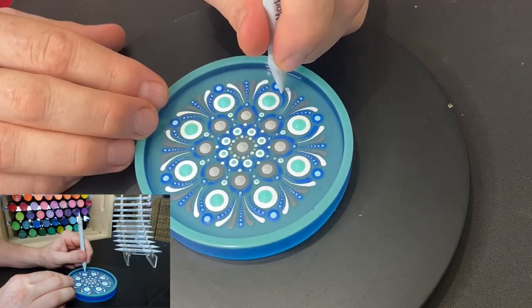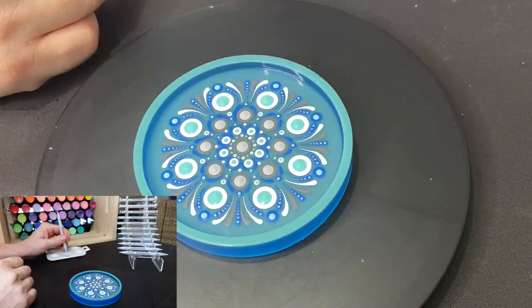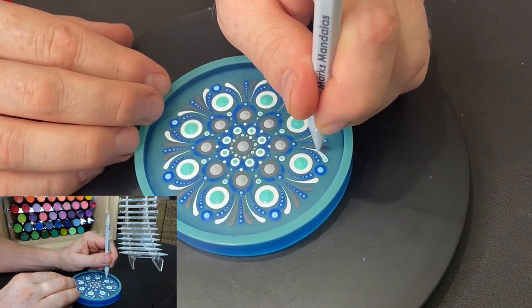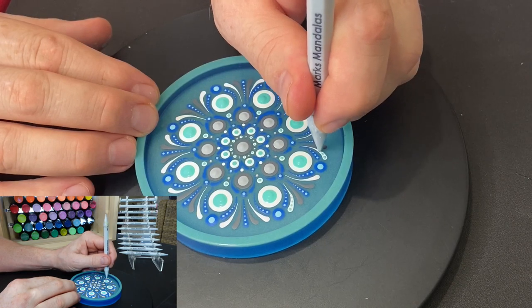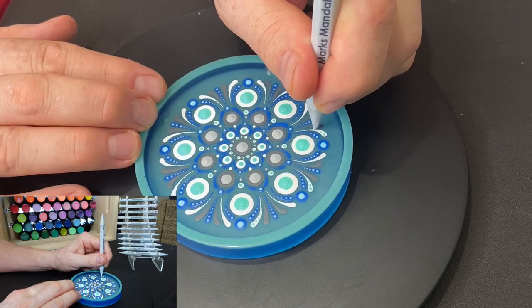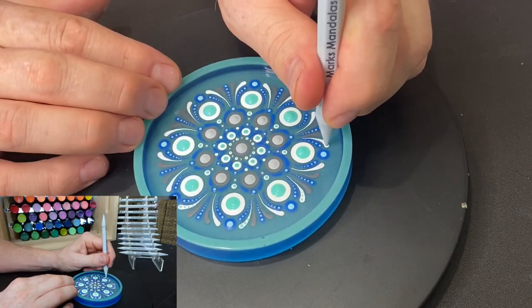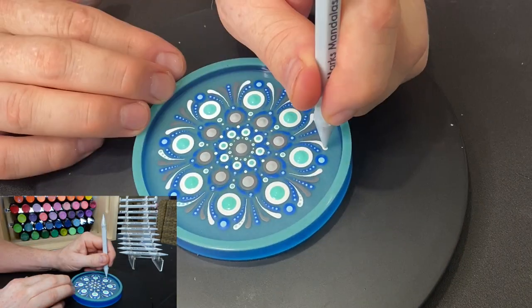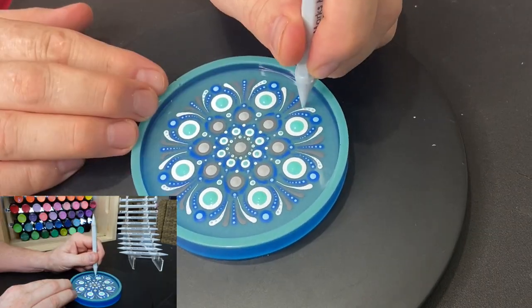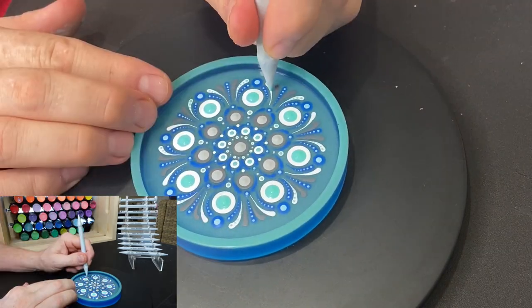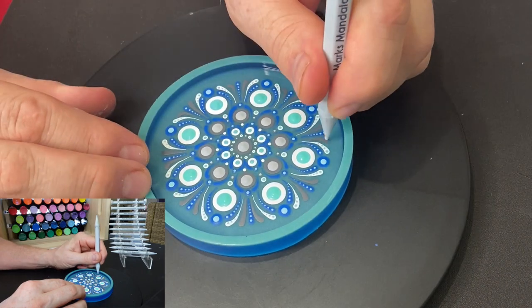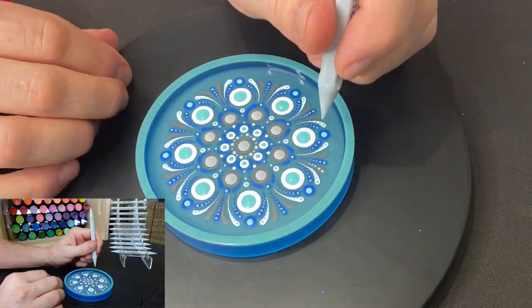Now the one thing that is different between walking the dots and all of the other dots including the drags is you only dip the tool one time and make multiple dots when you're walking the dots. Everything else you want to re-dip the tool every time before making another dot or when dragging a dot. So those are the big differences between regular dots and dot drags compared to walking the dots.